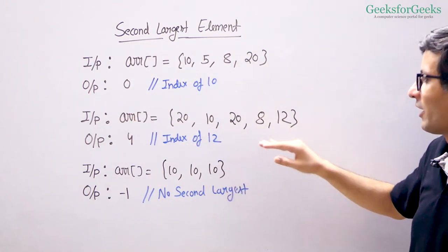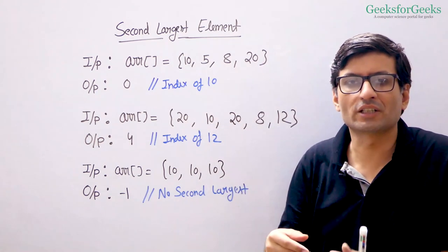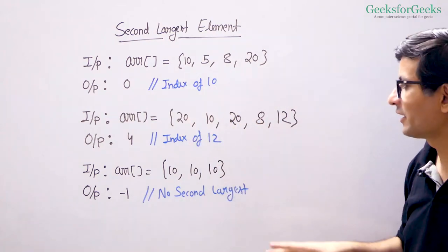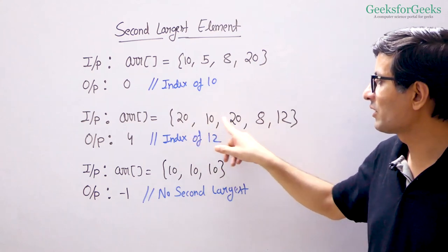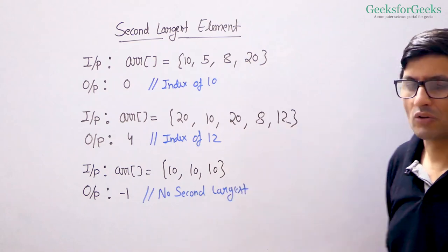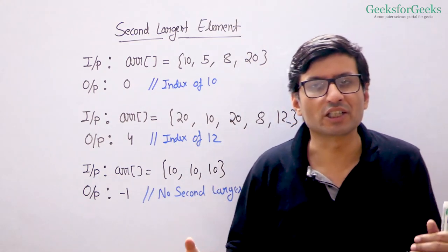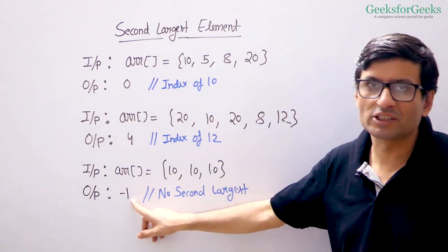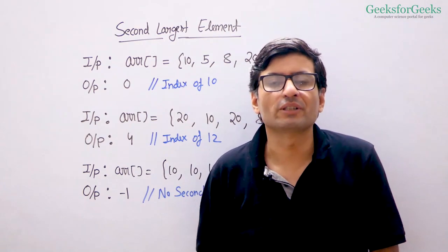In this example, the largest element is 20 and there are two occurrences of 20. We don't consider the other occurrence as the second largest element — we consider both of them as largest, so the second largest element is 12. The output is the index of 12, which is 4. This is an interesting corner case: all elements in the array are the same, so every element is the largest and there is no second largest. In this case, we return index minus 1 to indicate there is no second largest element.